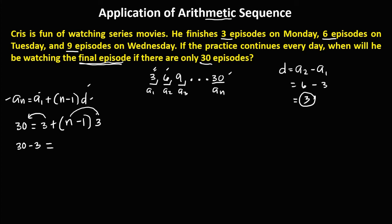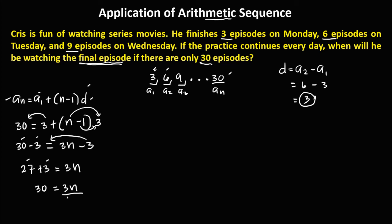Distributing gives us three n minus three. Simplifying: 30 minus three is 27. Transposing negative three gives 27 plus three equals three n, so 30 equals three n. Dividing both sides by three, n equals 30 divided by three, which is ten. Therefore, he can finish watching all 30 episodes in 10 days.